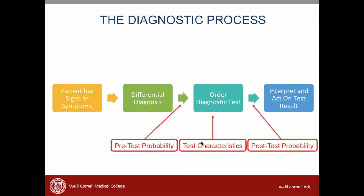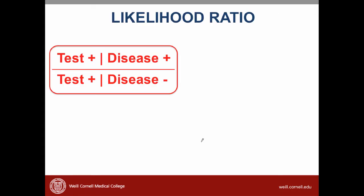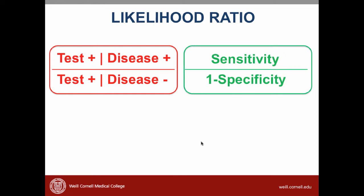With those two pieces of information, we can then calculate a post-test probability — that is how likely is a patient to have a disease after we get the test result. The likelihood ratio is, as its name says, a ratio. The numerator is the probability that a person who has the disease has a positive test, divided by the probability that a person who does not have the disease has a positive test. The formula for likelihood ratio is sensitivity over 1 minus specificity. We can use the sensitivity and specificity that we calculated before: the calculation is 0.85 over 1 minus 0.91, which gives us a likelihood ratio of 9.4.